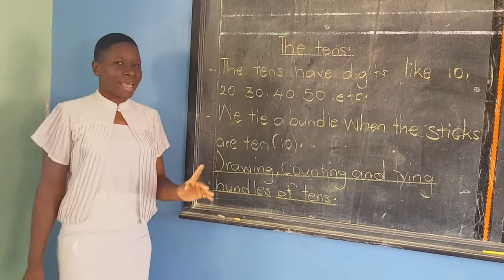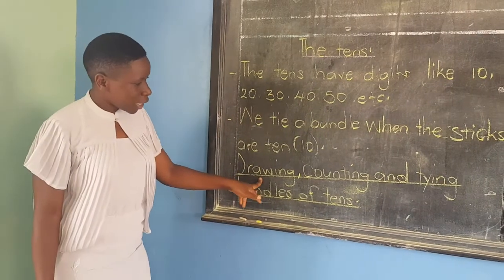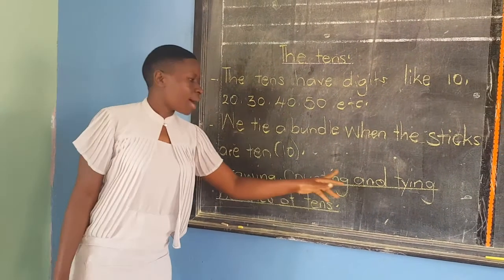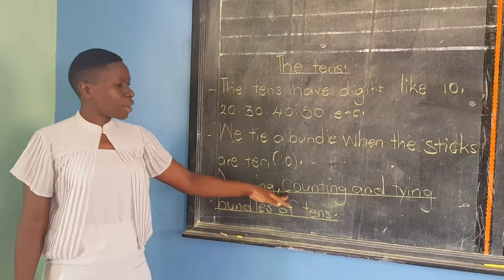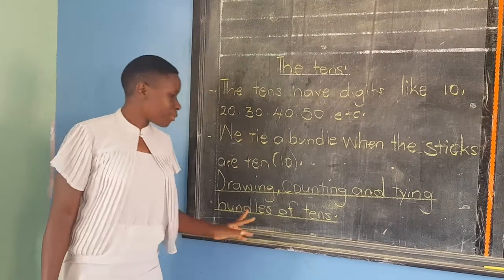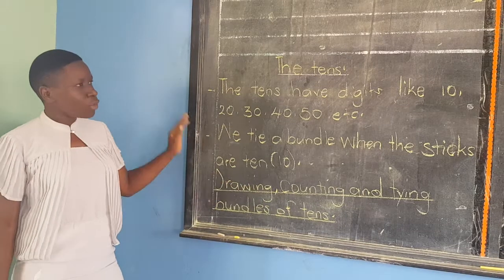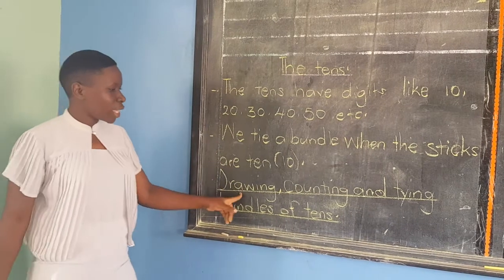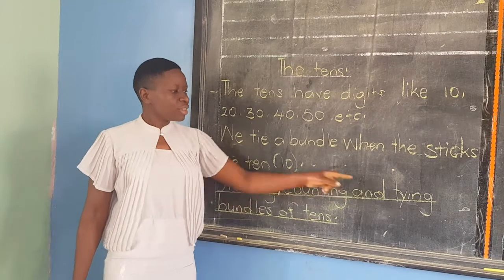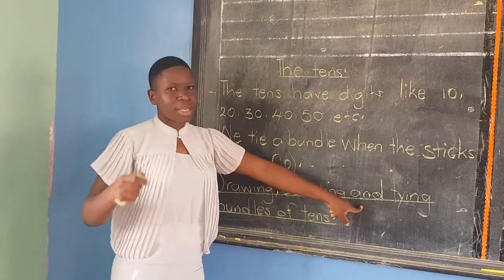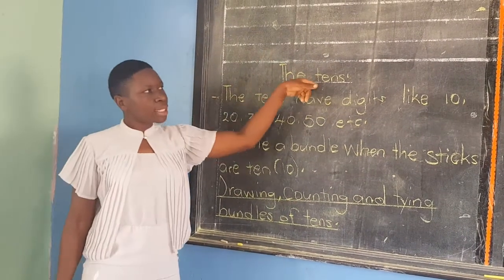Are we together, class? So we are going to draw, counting, and tying bundles of tens. Drawing, counting, and tying bundles of tens. Here, work widely. You are going to draw; as you are drawing, you are going to count. After counting, you tie that bundle to resemble the bundles of tens.